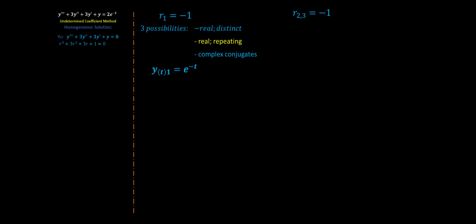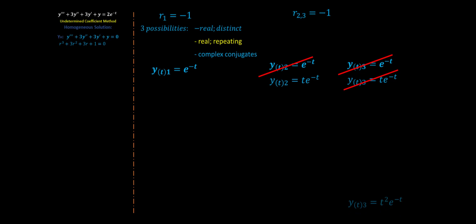Therefore, our solutions will have the following forms. y1 equals e to the negative t. Our y2 will have the same buildup because we are using the real repeating formula, but we can't leave it like that because the rule says we do not want our solutions to repeat. Therefore, we need to put a t in front of the e to the negative t, giving us t times e to the negative t for our second solution.